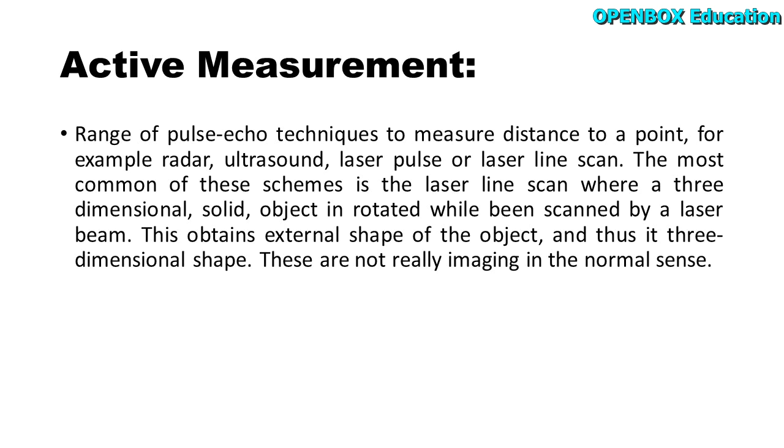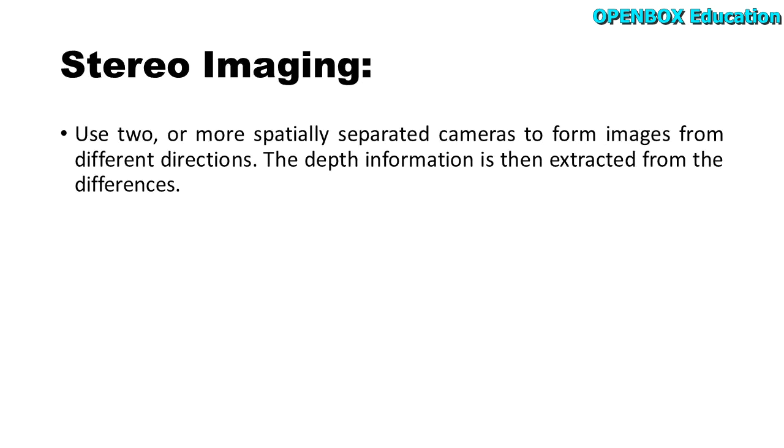This obtains external shape of the object and thus its three-dimensional shape. These are not really imaging in the normal sense. Stereo imaging: use two or more spatially separated cameras to form images from different directions.